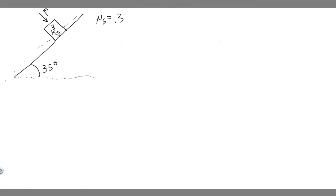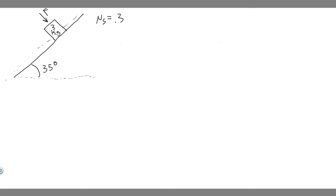In this problem, we're told the coefficient of static friction between the 3 kg crate and the 35 degree incline is 0.3. What minimum force F must be applied to the crate perpendicular to the incline to prevent the crate from sliding down? So I went ahead and recreated the drawing from the book. We have this thing on an incline at 35 degrees, it's 3 kg, and we have this perpendicular force to the incline. We also know the coefficient of static friction is 0.3.